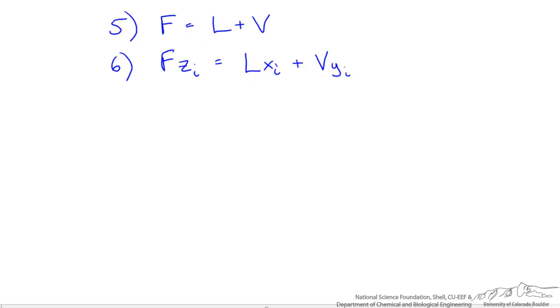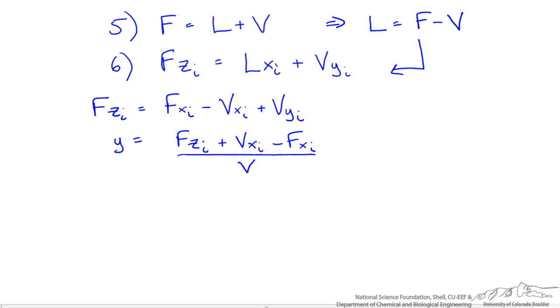So we are going to take our two material balance streams and rearrange them. Now the first thing is to get rid of our L variable. So we set L equal to the feed minus the vapor flow. And we can plug this in to our second equation. So we want Y on the left side. Now we can rearrange this equation and get the following.